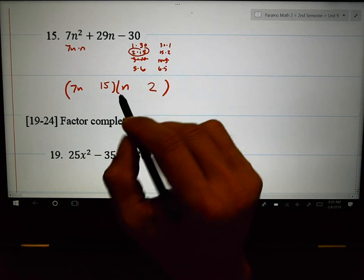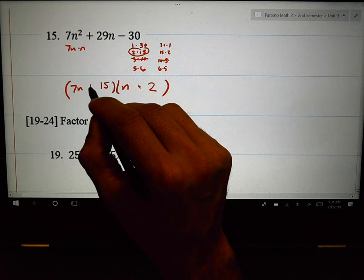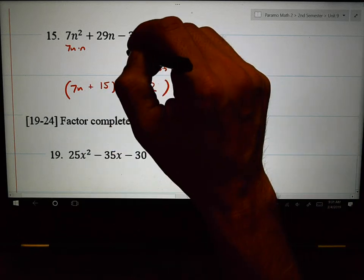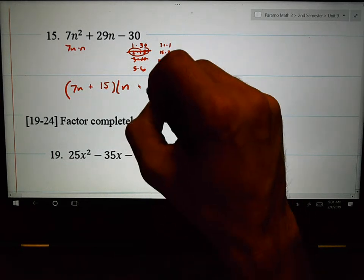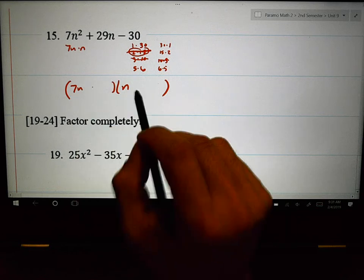Because I would need 14 to be a positive and this to be a positive. And it needs to multiply to be a negative 30. Oh. That was so close. It's not that one. It can't be. Sometimes that happens. Sometimes you pick 2 and you think you got it. But then that last one just didn't work.